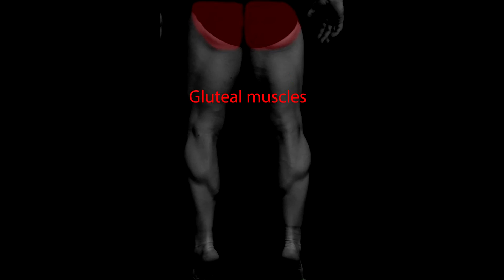The three gluteal muscles — gluteus maximus, medius, and minimus — are the muscles of your butt. They extend and abduct the hip as well as stabilize the pelvis.